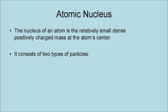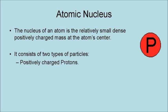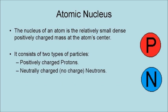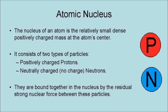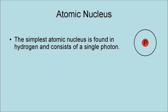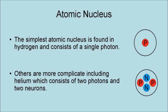The nucleus consists of two types of particles: the positively charged protons and the neutrally charged neutrons. They are bound together in the nucleus by the residual strong nuclear force between these particles. The simplest atomic nucleus is found in hydrogen and consists of a single proton.